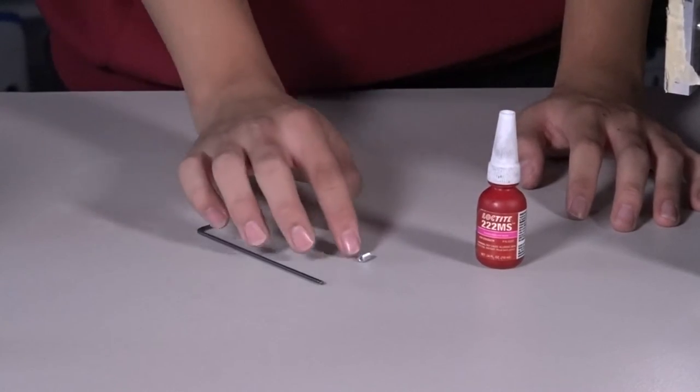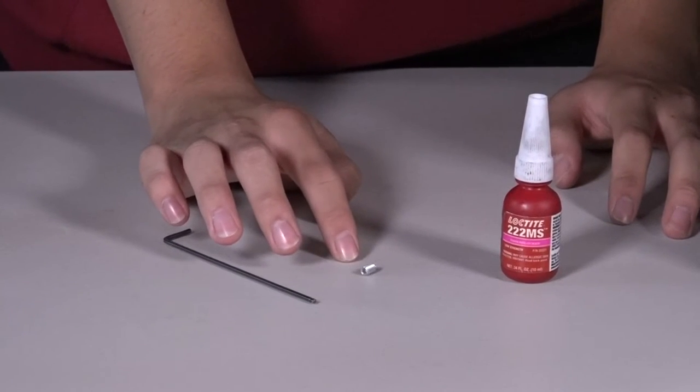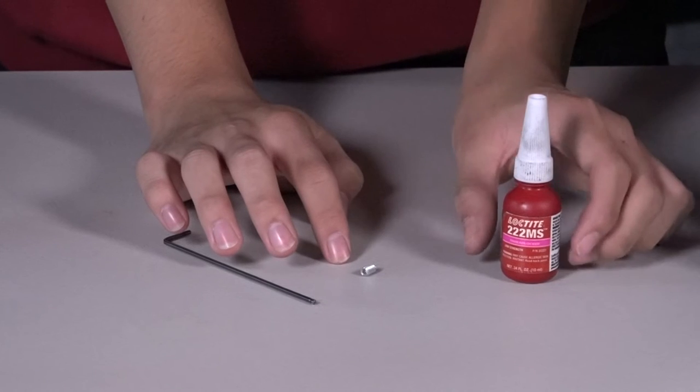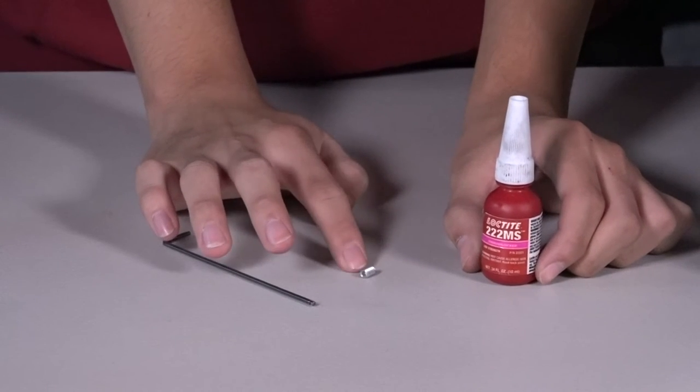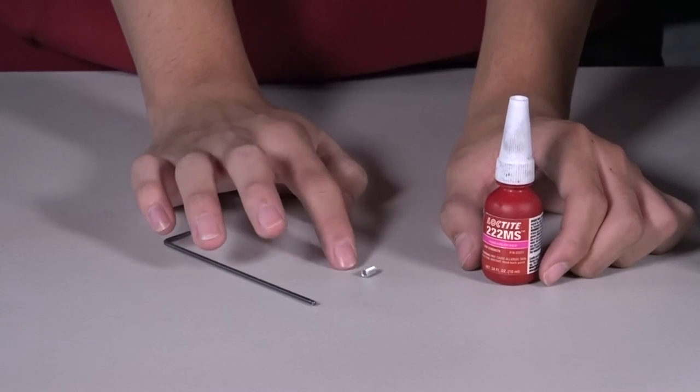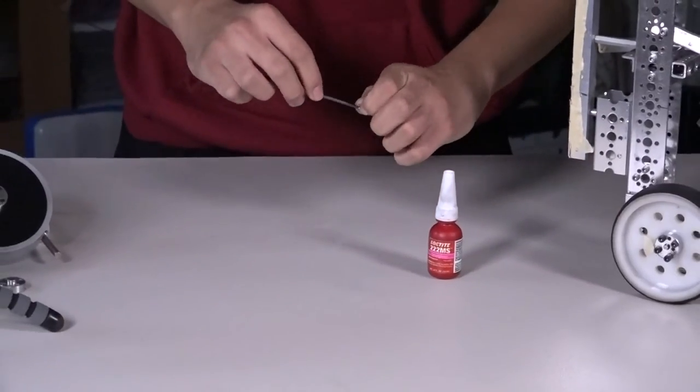Tip number three, these small set screws are critical in making sure the wheel doesn't fall apart during competitions. So we like to use something called the type 222 low strength Loctite and making sure these are attached properly to the motor hubs. So I'll be applying some Loctite for you right now.